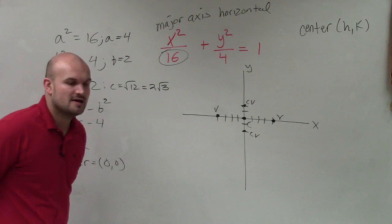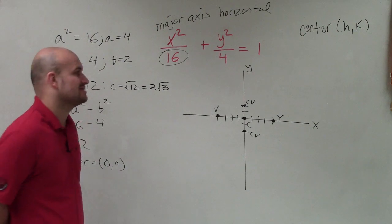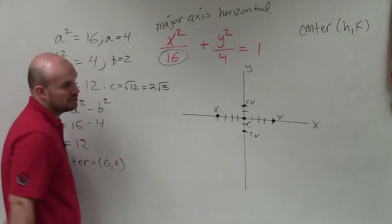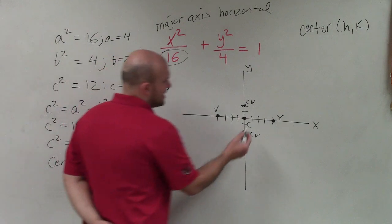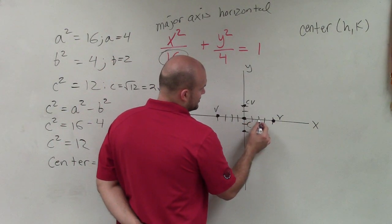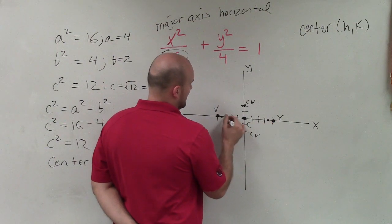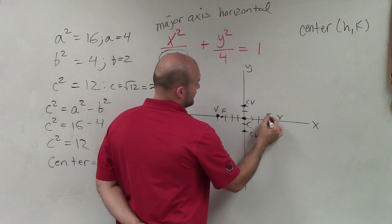because 3 squared is 9, and 4 squared is 16. So it's going to be somewhere between 3 and 4. Obviously, I don't have the most accurate graph in the world, so I'm just going to estimate between 3 and 4, 1, 2, 3, or 1, 2, 3, and 4. So I'm just going to put it right there, and then to the left. And these are going to be what we call our foci.